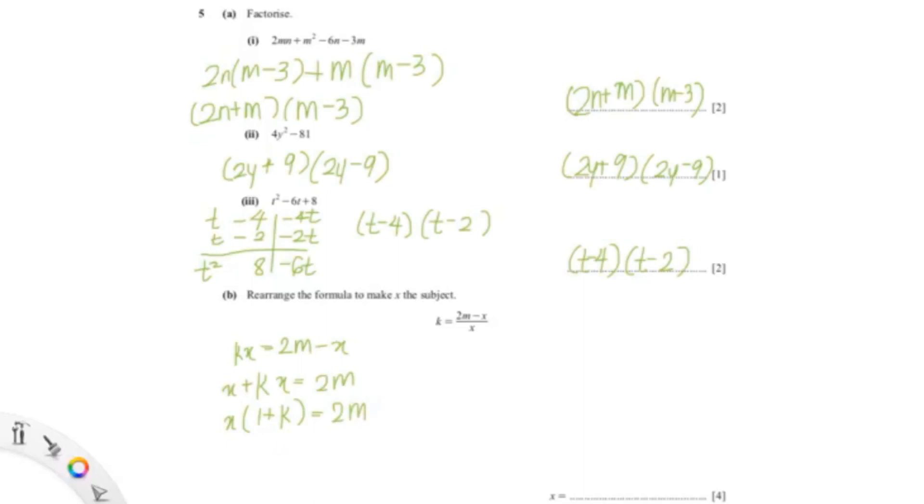We can bring 1+k to the other side, which would give us x=2m/(1+k). And we factorize x out. So the answer is 2m/(1+k).